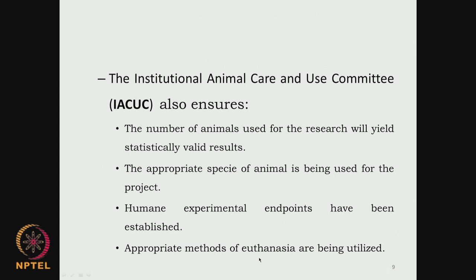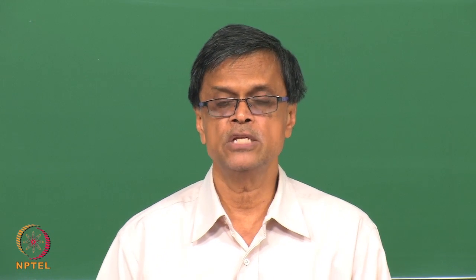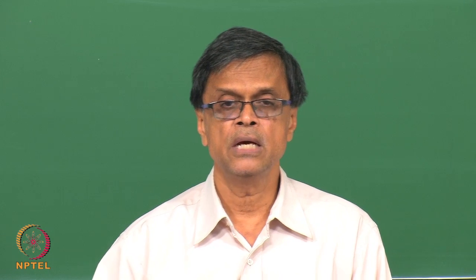They also check whether appropriate methods for euthanasia are being used. If the animal is sacrificed, how is it being done and what procedures are followed so that the animal does not face pain when it is sacrificed. There are quite a lot of overseeing committees which not only monitor the well-being of the animal, but also review the experimental procedure strategy, give suggestions and modifications with respect to the 3 R's.